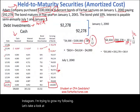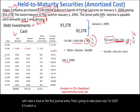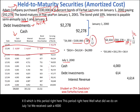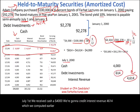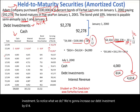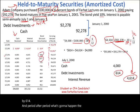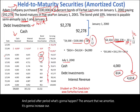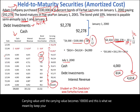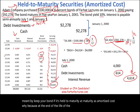Now let's look at the first journal entry, taking place on July 1st, 20X0. On July 1st, we received cash of $4,000. We credit interest revenue of $4,614, which we computed earlier. The difference increases the debt investment by $614. Period after period, the amount we amortize increases our carrying value until it becomes $100,000 — this is what we mean by holding the bond to maturity at amortized cost.